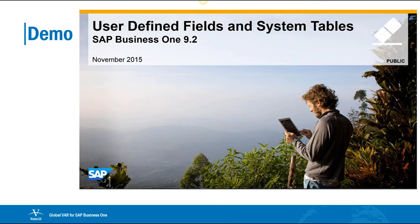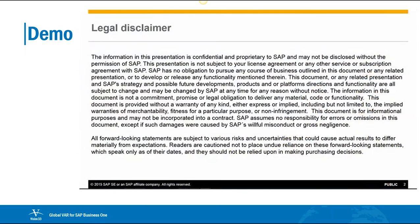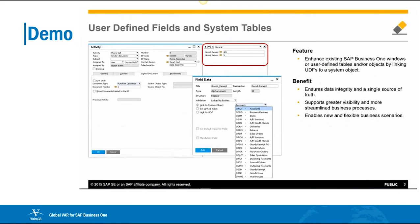Welcome to our demo demonstrating enhancements to user-defined fields and system tables in SAP Business One, Release 9.2. When adding a user-defined field to an SAP Business One table, you can now link it to a system table, which allows you to create new and flexible business scenarios. There's no additional need to fill the user-defined field manually or retrieve it from existing master data and have it kept in sync. Now with direct access to the system object, the data is consistent and its integrity is maintained as there is only one single source of truth for this user-defined field.